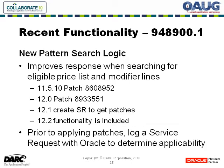Note 948900.1 talks about pattern search logic. With Advanced Pricing, you can define a virtually unlimited number of additional pricing and qualifying attributes. Those qualifying attributes can be attached to qualifiers against a price list or a modifier in any combination of and/or conditions. You can also associate pricing attributes to list lines to further identify and filter how they are applied. This new functionality gives the application a way to analyze those patterns in advance and take advantage of them when determining what lines and lists can be used in a pricing call.